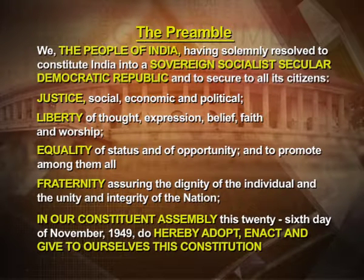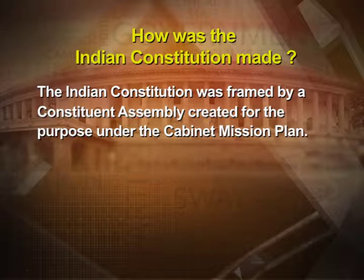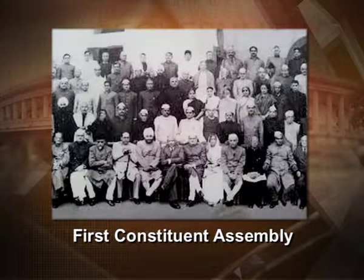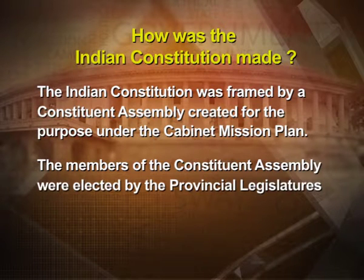These are the objectives that the Indian constitution intends to fulfill. This constitution was made by a constituent assembly, formed as a result of the cabinet mission plan. In the wake of India's partition, the original constituent assembly was split into two — one for India, one for Pakistan. The Indian constituent assembly was elected by the various provincial legislatures, which were themselves established as a result of the Government of India Act of 1935.